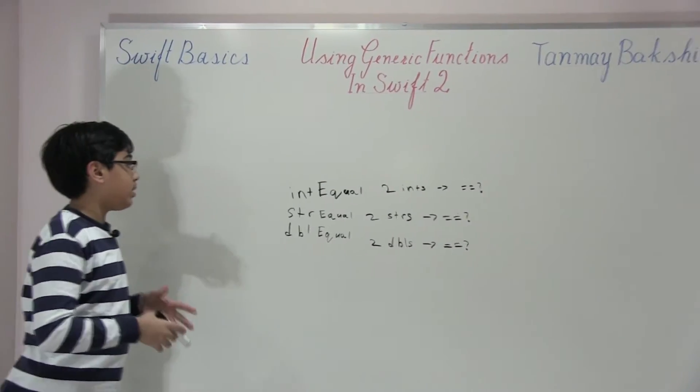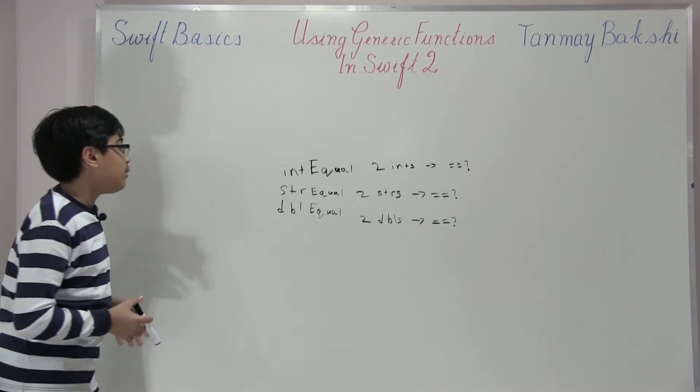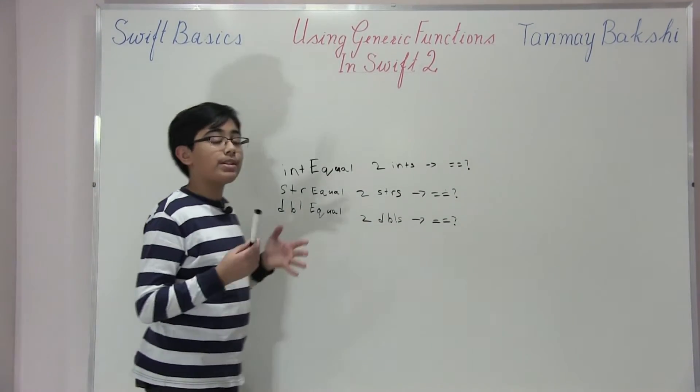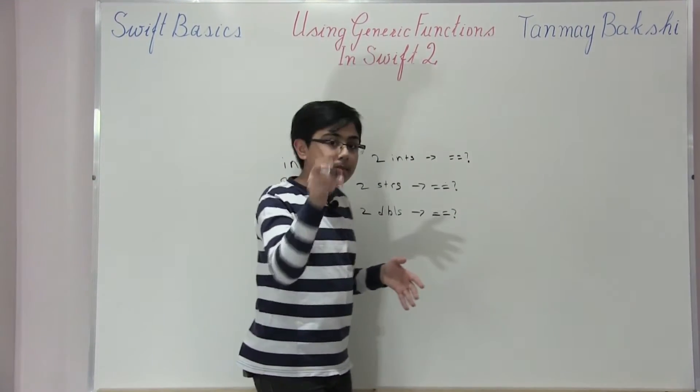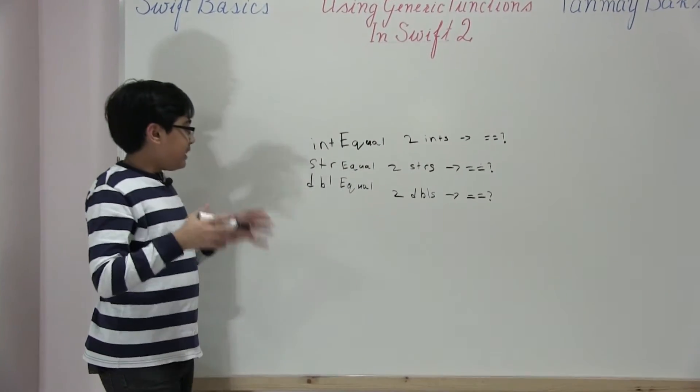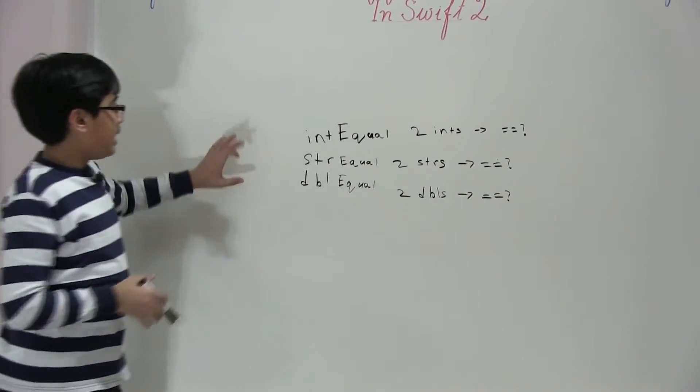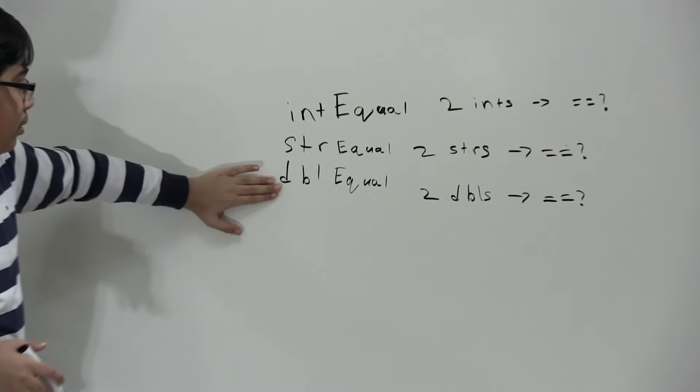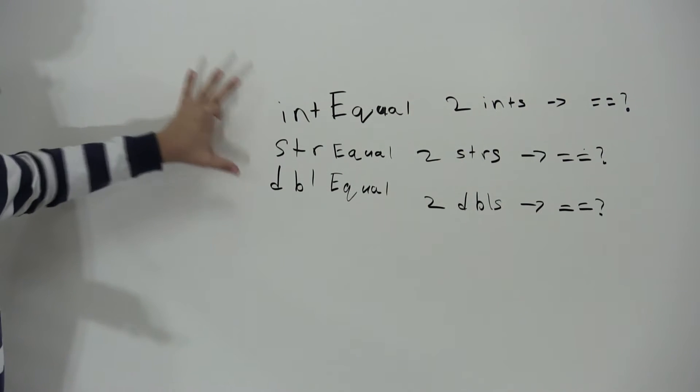And so in order to follow this we use something called generics. How would generics help us solve this problem? Well let me explain. Let's take this example. First of all, let's see integer, string, and double - what class do they all inherit from?